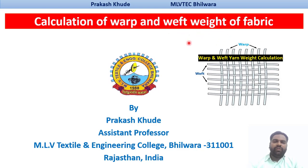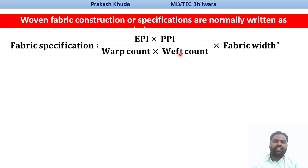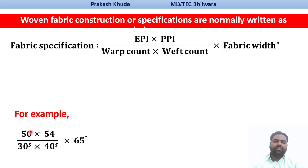Before that we need to know how the fabric specification or construction has been written. They can be written in two different ways. One in which EPI and PPI has been mentioned at the top while warp count and weft count of the fabric are mentioned at the bottom, and the fabric width has been given. For example, one construction parameter is: ends per inch is 50, picks per inch is 54, warp count is 30, weft count is 40, and fabric width is 65.